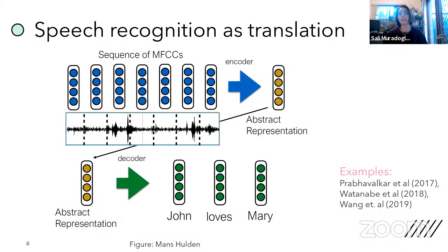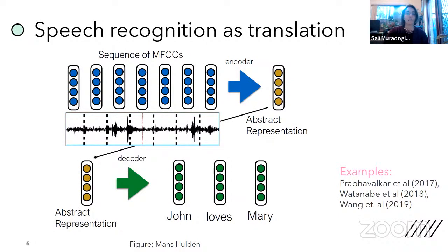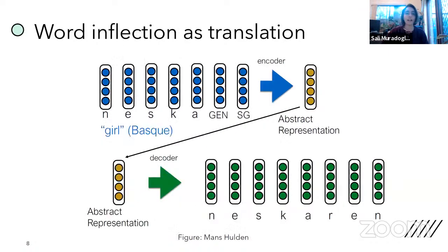We see this in a lot of different places — machine translation, speech recognition. Same idea: you have an input, generate an abstract representation, then decode into the desired output. Similarly, we have a similar idea in syntactic parsing as translation — you linearize trees in the abstract representation to give you syntactic information as the output. And we have the same idea again in word inflection as translation: an input in a different form with morphological tags is fed into the encoder to generate an abstract representation, from which we get the inflected form.